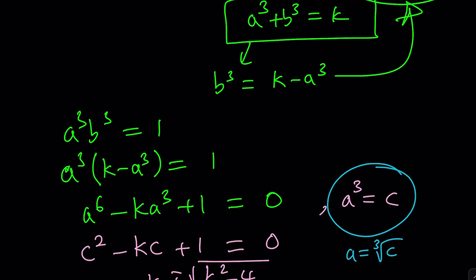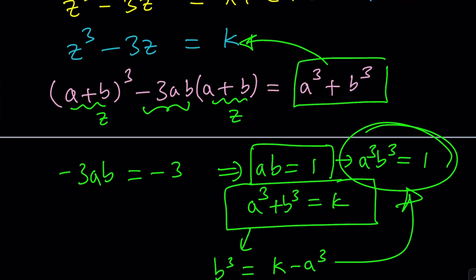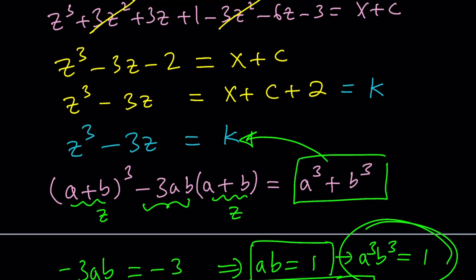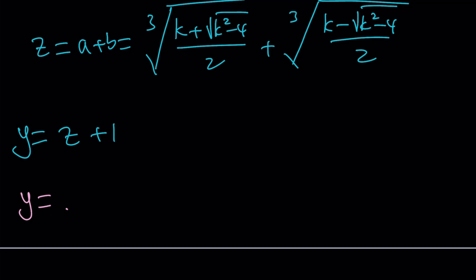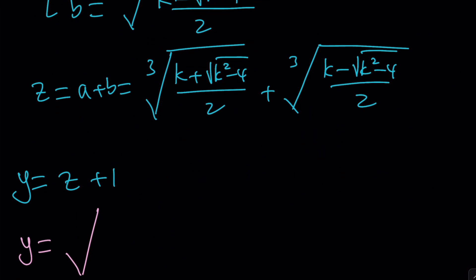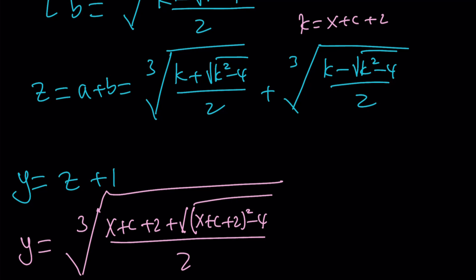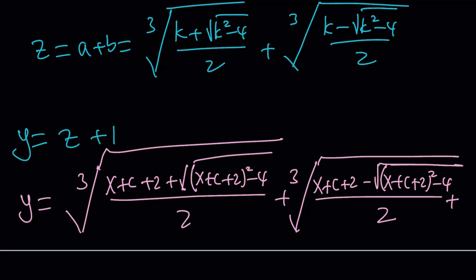k also has a meaning. k is equal to, from here it's a cube plus b cube, but we called it before x plus c plus 2. So we're going to replace k with that, x plus c plus 2. So y is going to be this expression. k is x plus c plus 2. I'm going to go ahead and replace it with that. x plus c plus 2, plus the square root of x plus c plus 2, squared minus 4, all over 2. And then the same thing with a minus sign. x plus c plus 2, minus the square root of x plus c plus 2, squared minus 4, over 2. And then we're going to cube root this. And then this would be the y value plus 1. Of course, we have to add 1 as well, because otherwise it would just be z.